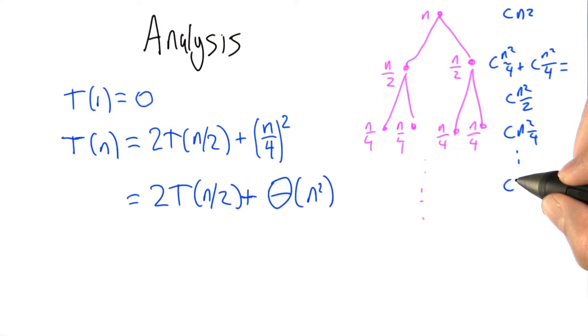In fact, each level down here, we're getting cn squared over 1, over 2, over 4, over 8, over 16, and so on. And we add all these up, we get cn squared times 1 plus 1/2 plus 1/4 plus 1/8 and so on, which adds up to something on the order of 2.